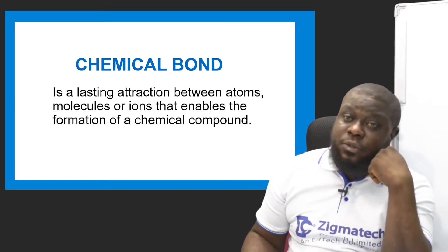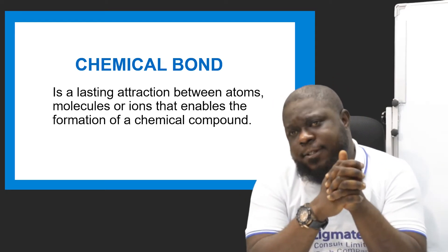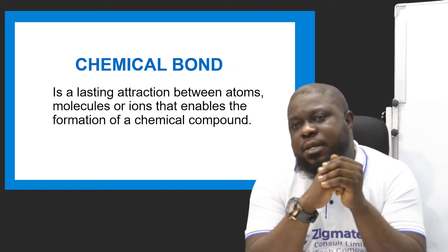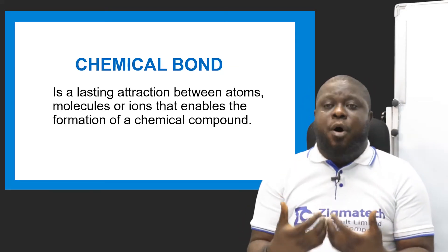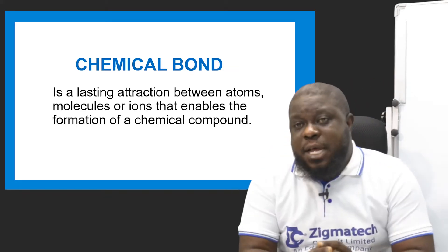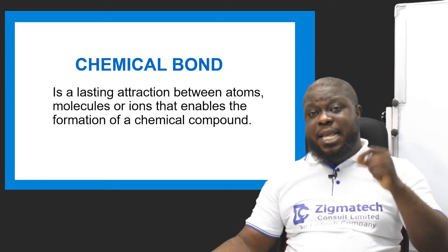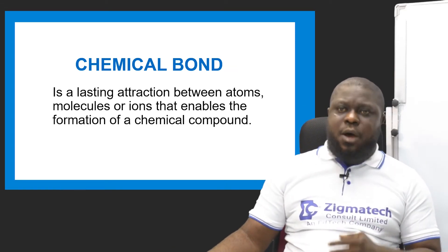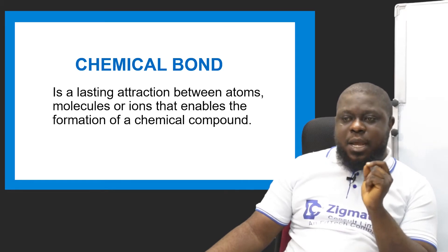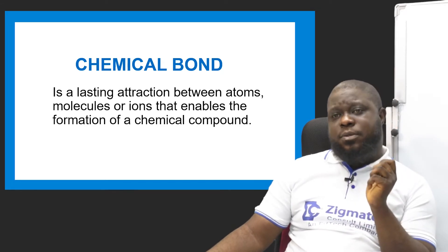There are two types of chemical bonds. The type of bond determines the type of compound being made — the bond and the compound are related. If it is an ionic bond, it gives you an ionic compound. If it is a covalent bond, it gives you a covalent compound. The two types of chemical bonds are ionic and covalent — these are the two types of bonds that create a compound.